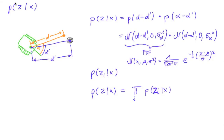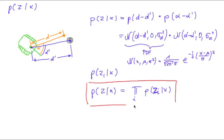To compute the overall probability of measurements for a fixed pose — for a certain particle — all we have to do is loop over all detected landmarks. For each detected landmark, we compute the probability of the measurement, which is decomposed into the probability for the distance measurement and the probability for the angle. Then we form the product of all those probabilities. So this is all there is to do.